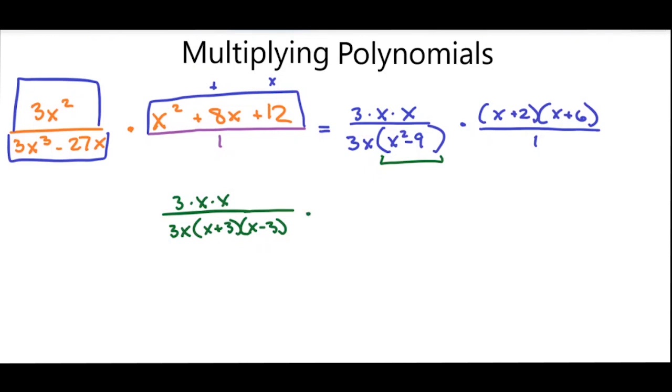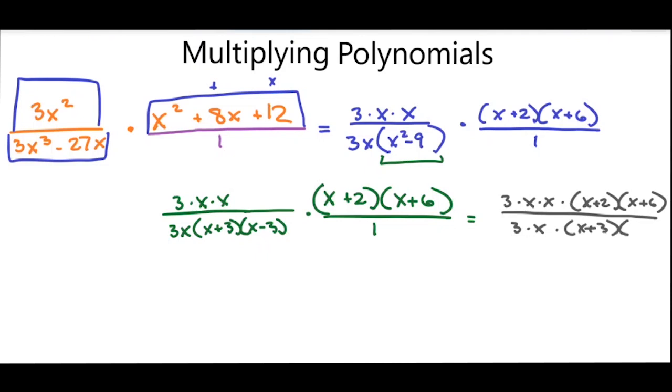And I'm going to multiply that by the x plus 2 times x plus 6 over 1. Well, let's make that one big fraction. And that becomes 3 times x times x times x plus 2 times x plus 6 over 3 times x times x plus 3 times x minus 3.